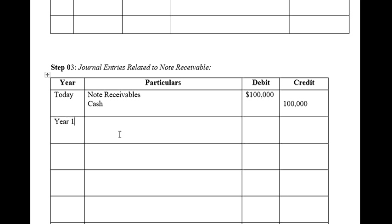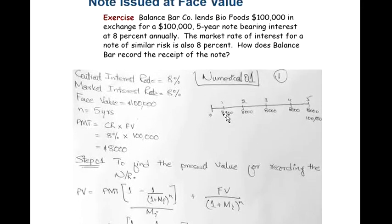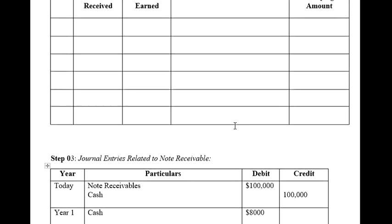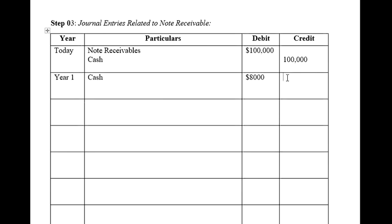After waiting one year, at the end of year one we receive $8,000. This $8,000 is interest revenue — interest earned. We debit cash for $8,000 (increase in asset) and credit interest revenue for $8,000 (increase in revenue). This same entry is repeated at the end of years two, three, and four.